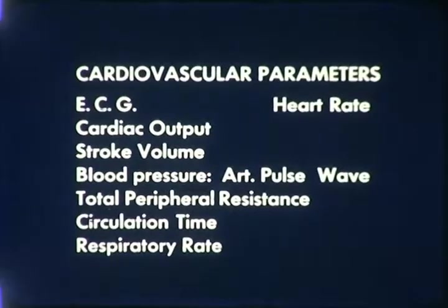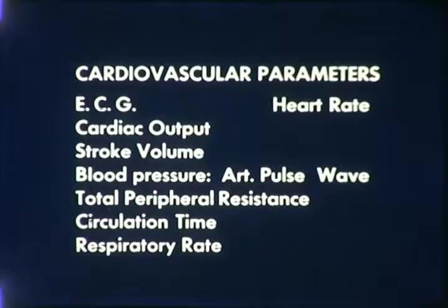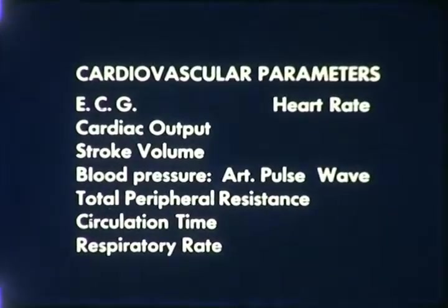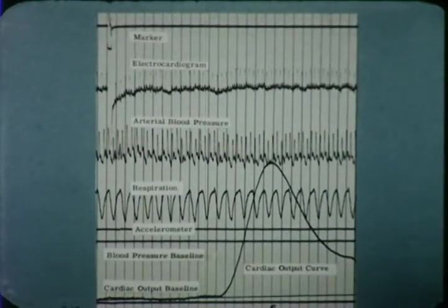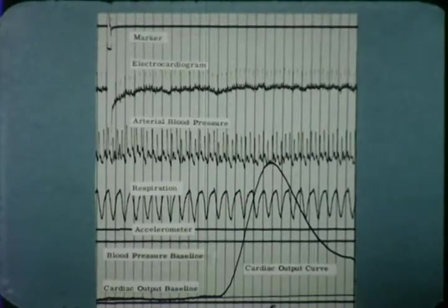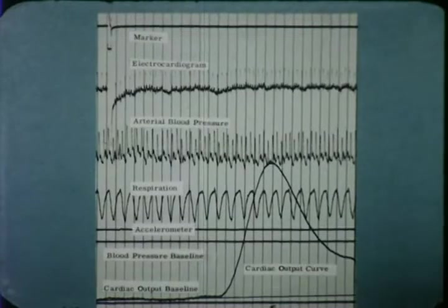These cardiovascular parameters have been studied in dogs and in man. These measurements are shown as displayed on an eight-channel oscillographic recorder. The vertical lines represent one-second time intervals. The marker line at the top indicates the exact time of an intravenous injection used to determine cardiac output. The time between this instant and the beginning of the cardiac output curve is the circulation time.